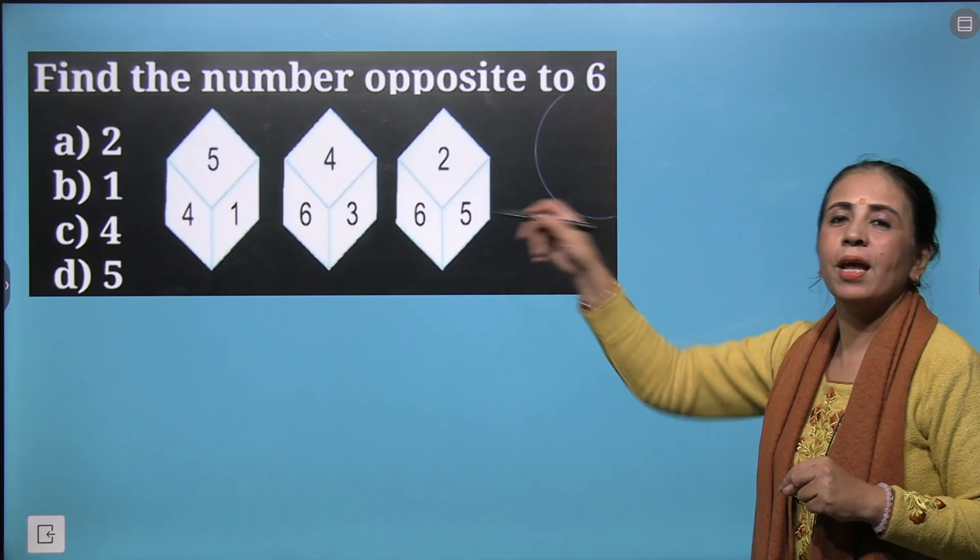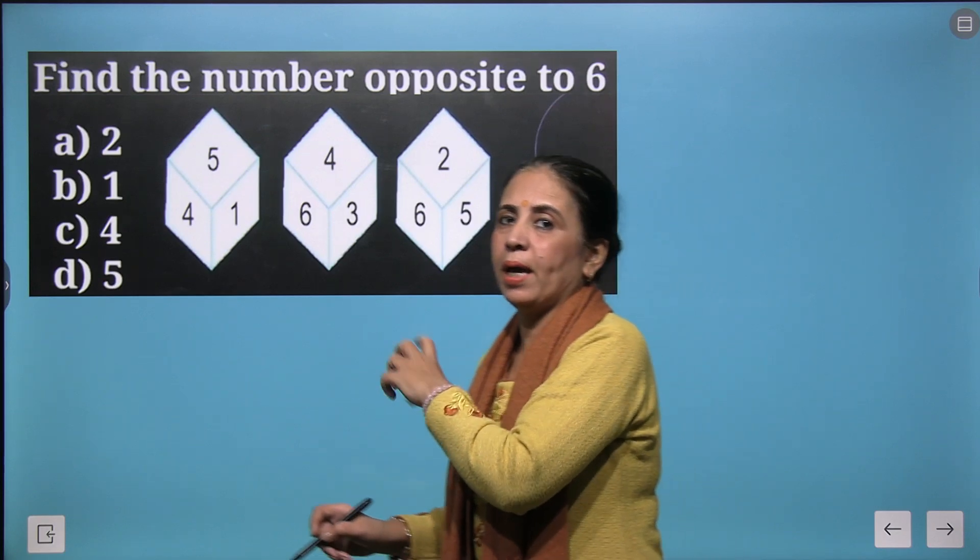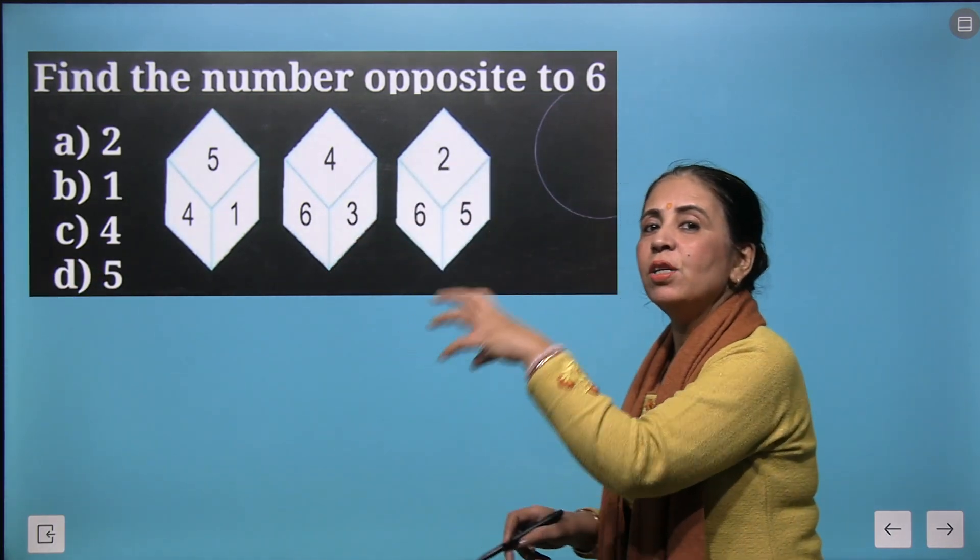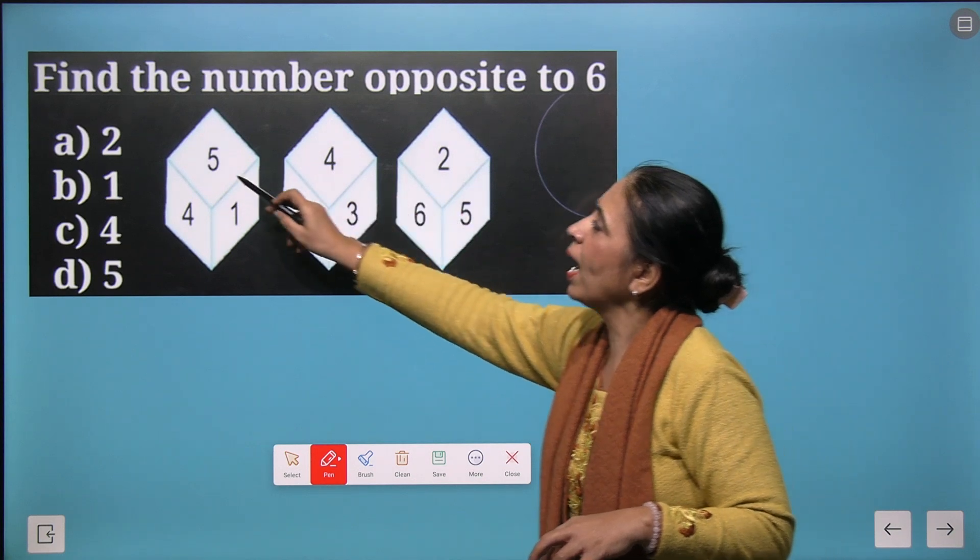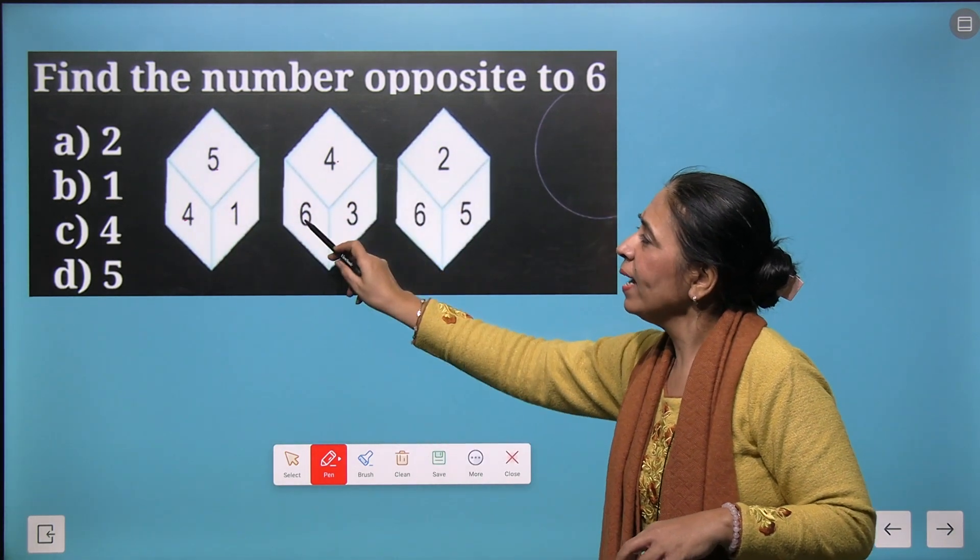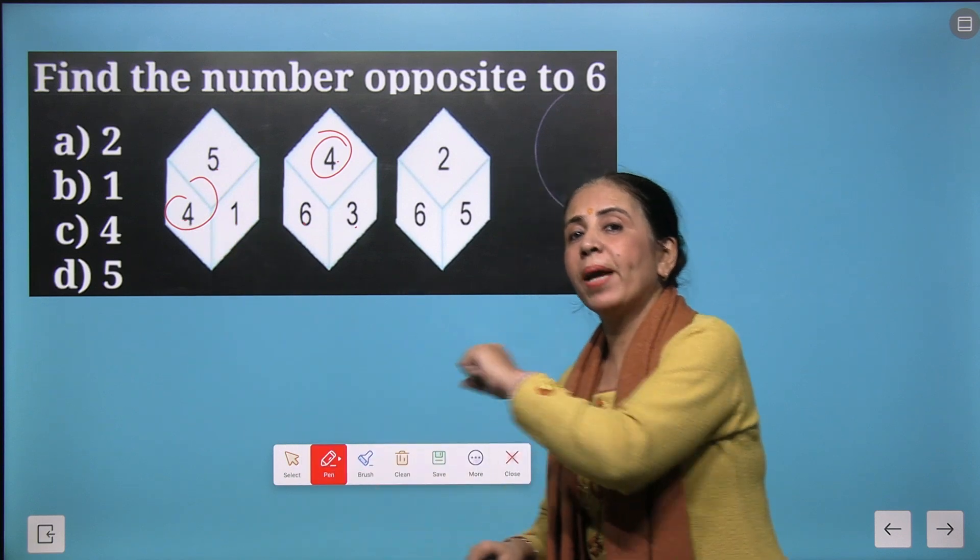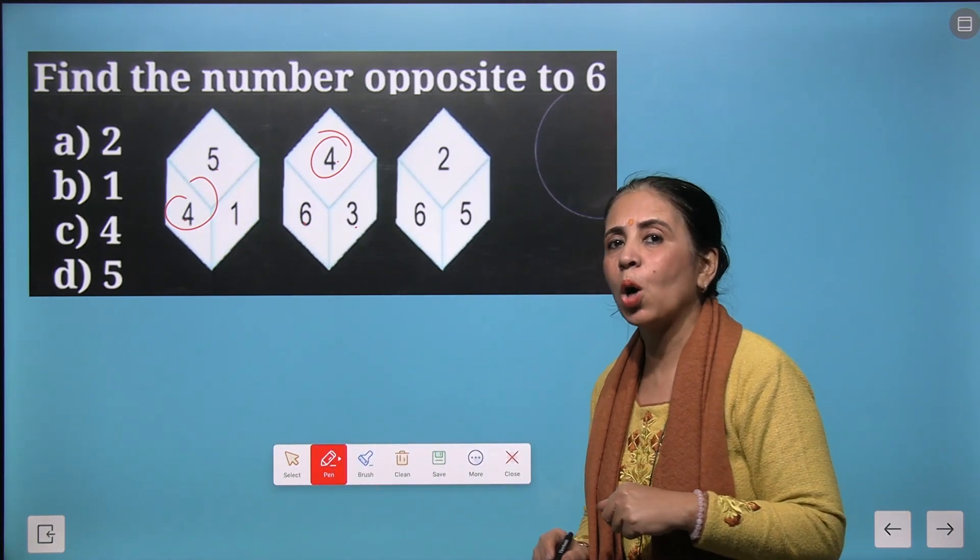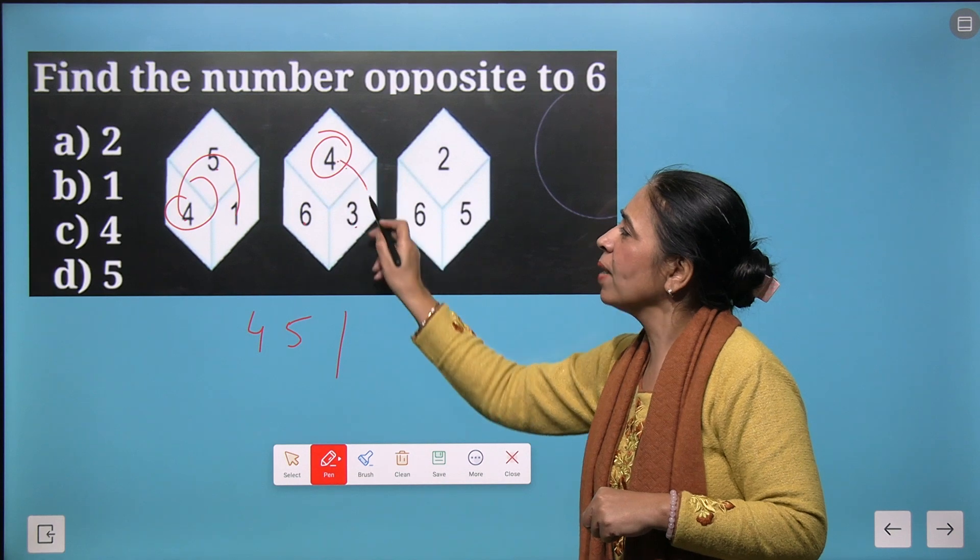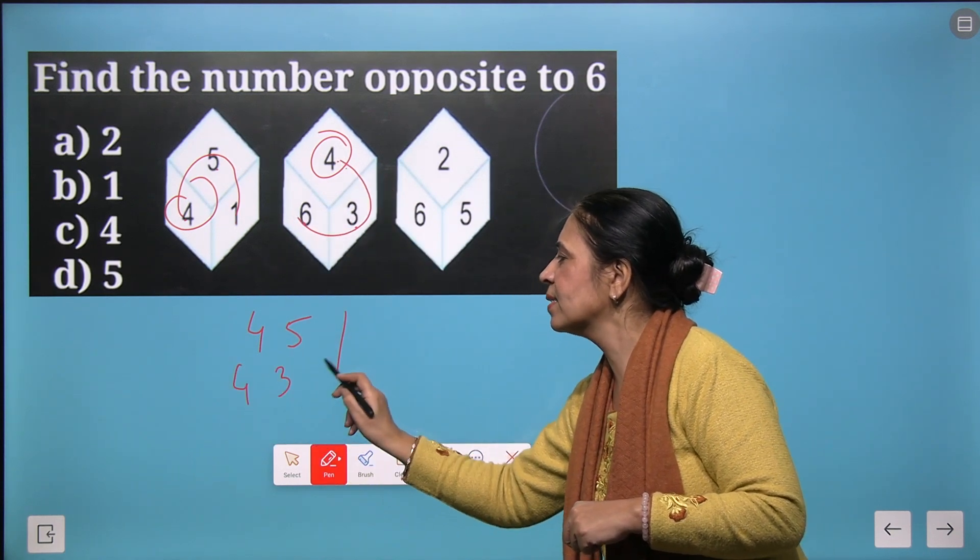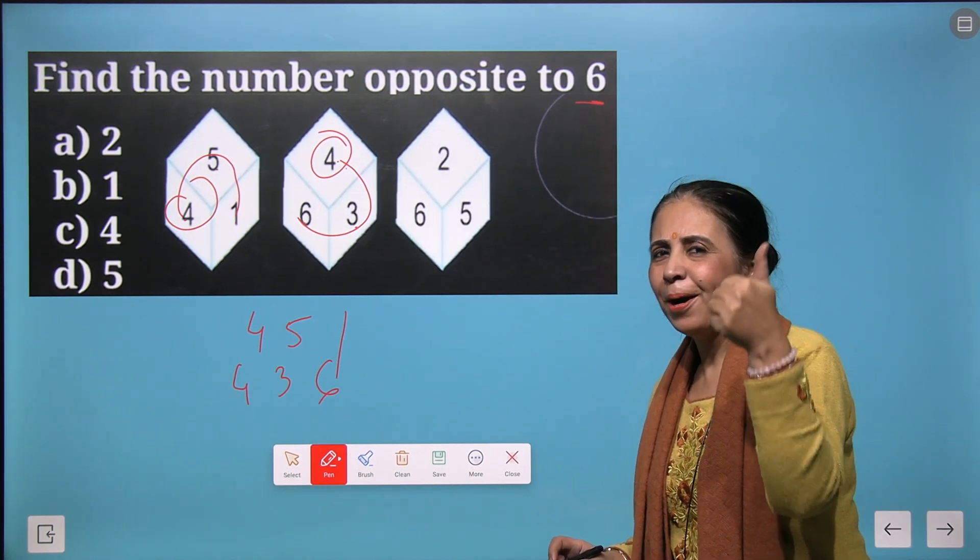Let's take more question. Here we have 3 dice given. Now the previous rule will not work here. Something special has to be remembered. We will find 2 dice. So if you look at 5, 4 and 1 and 4, 6 and 3. Do you have 1 number common? Yes, that is 4. So we will be picking the 2 dice and take a clockwise movement. 4, 5 and 1. Now from here let's write 4, 3 and 6. Now the question is what is opposite to 6? Can you help me? Great going. That's 1.